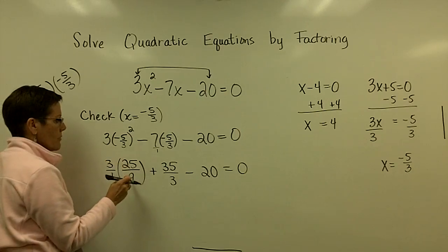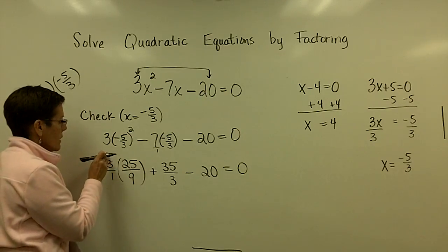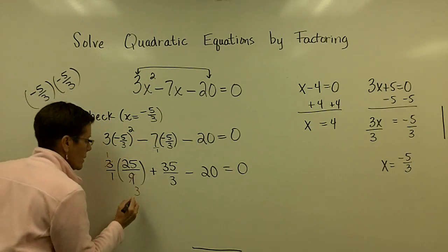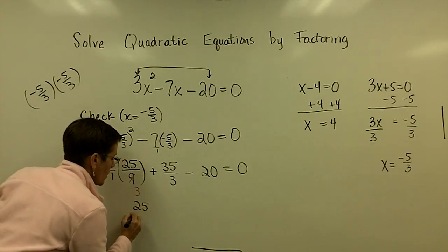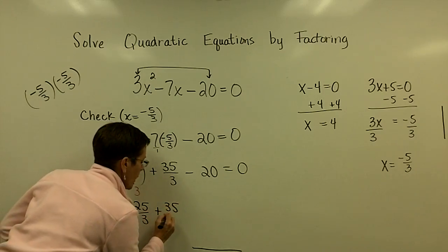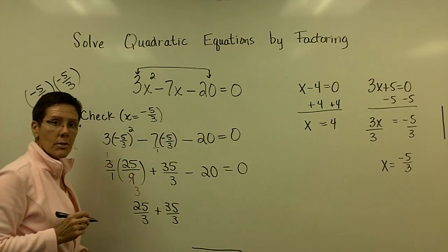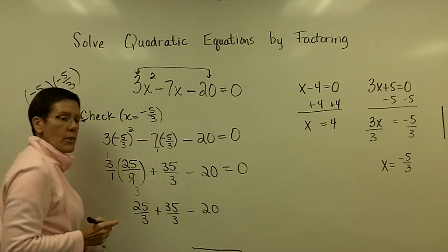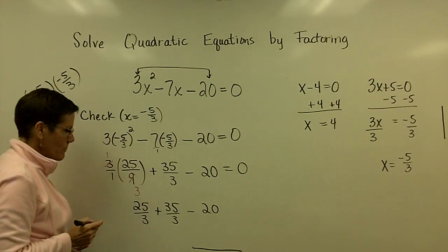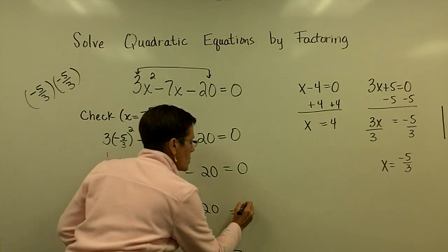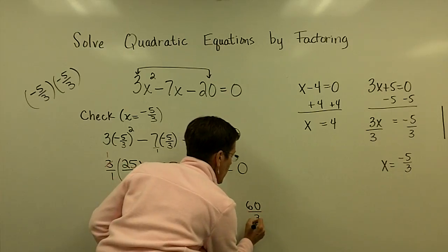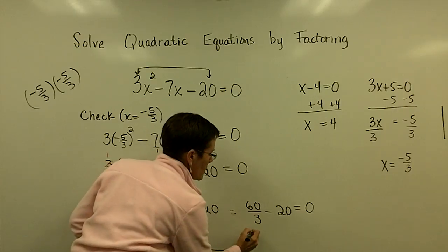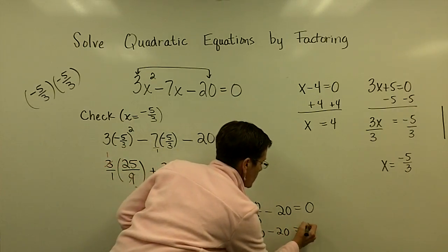When I multiply this, instead of calling it 75 over 9, let's go ahead and say that 3 goes into here once and into there 3 times. So what we have now is 25 thirds, and oh good, 35 thirds. Those have common denominators, so I'm allowed to add those. 25 and 35 adds to be 60 over 3. I've got 60 over 3 minus 20, and I want to know if that's a true statement. And 60 over 3 is 20, and 20 minus 20 is equal to 0.